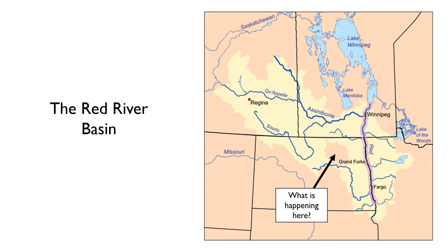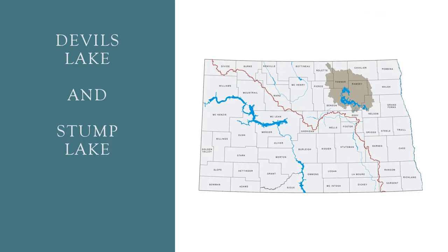The watershed map of the Red River basin has an odd exclusion area. Why does this region appear to lie outside of the Red River watershed? This region is identified as lying outside of the Red River basin because it is an enclosed basin.